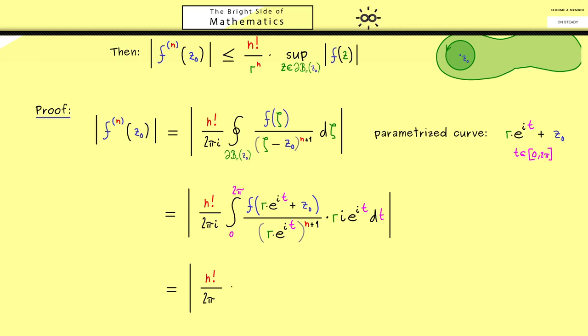Otherwise we can bring the 1 divided by r to the power n in front of the integral. And then the only thing that remains inside the integral is the function f and in the denominator e^(it) to the power n, which is simply e^(it*n). And please don't forget all this we have inside the absolute value.